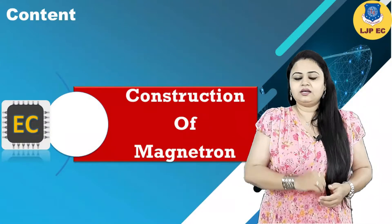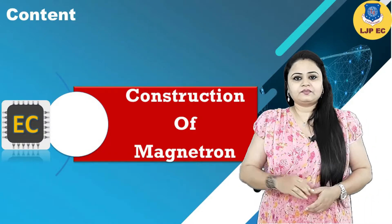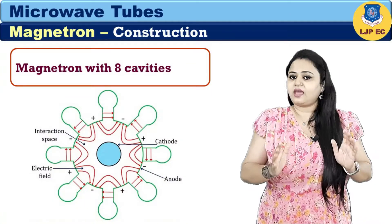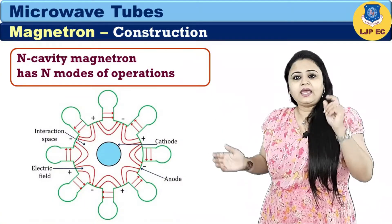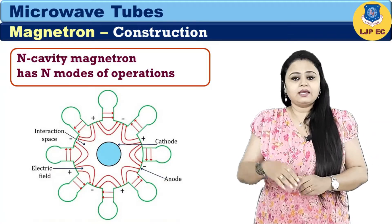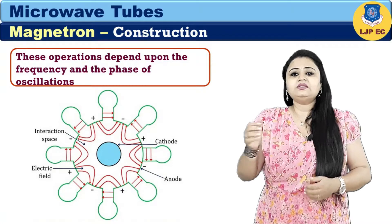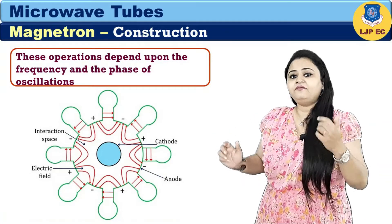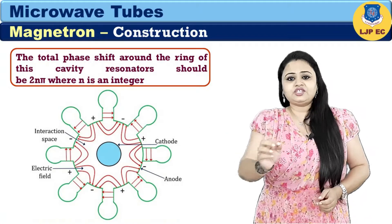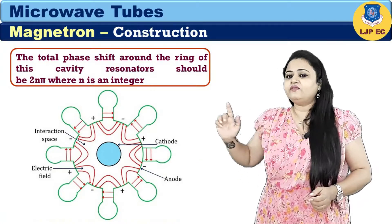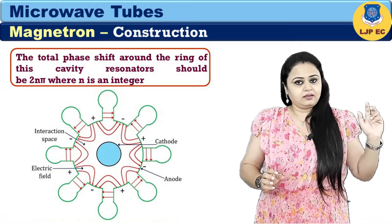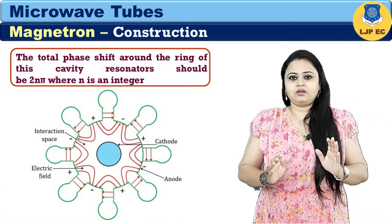Now let us move on to the construction of Magnetron. The figure here shows a Magnetron with 8 cavities. An n-cavity magnetron has n modes of operation. This operation depends upon the frequency and phase of oscillations. The total phase shift around the ring of this cavity resonator should be 2nπ, where n is an integer number.